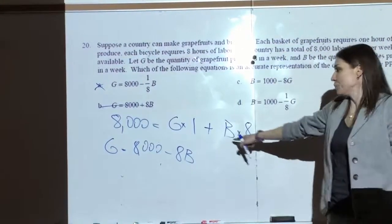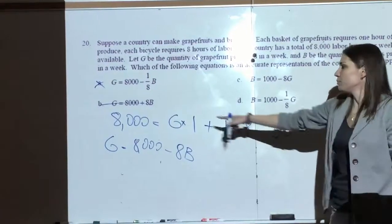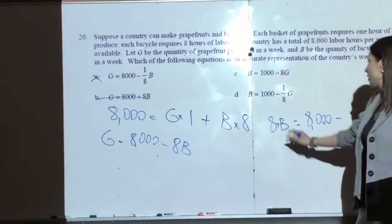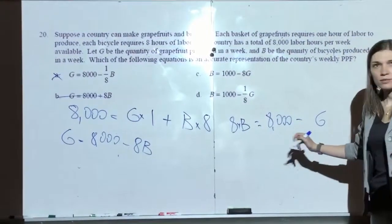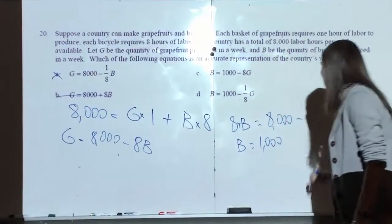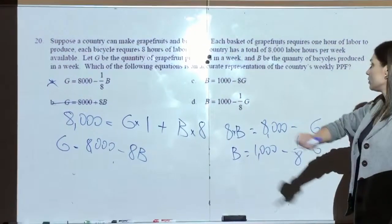These two solve for B. So, if I solve for B, I have 8B equals 8,000 minus G. That would be D.